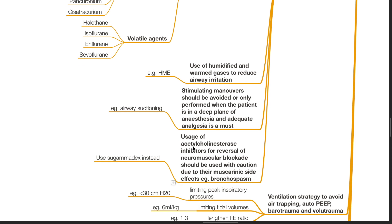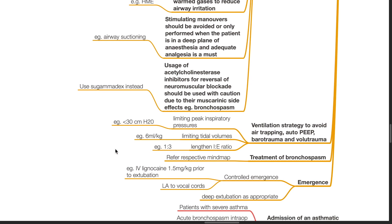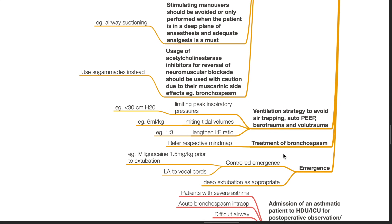Usage of acetylcholinesterase inhibitors such as neostigmine for reversal of neuromuscular blockade should be used with caution due to their muscarinic side effects, i.e. bronchospasm. Ventilatory strategy to avoid air trapping, auto-PEEP, barotrauma and volutrauma: limit peak inspiratory pressures to less than 30 cmH2O, limit tidal volumes to 6 mL per kg and lengthen I:E ratio such as 1:3. Treatment of bronchospasm will be discussed in the next video.